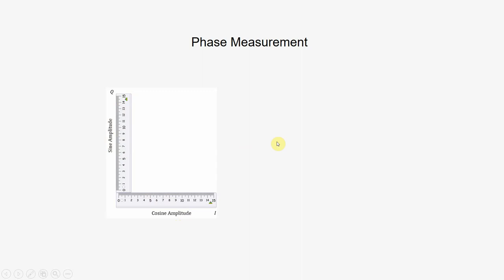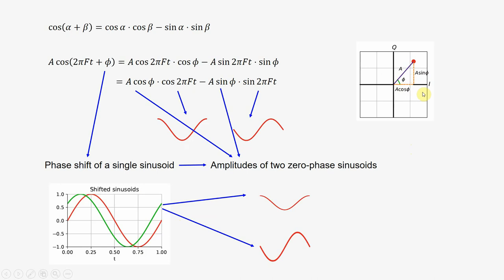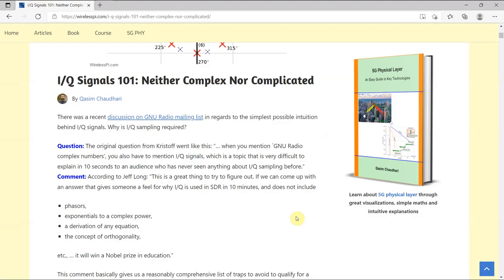From the signs of the amplitudes we can also find out which quadrant the phase was in. So this was a short summary of what IQ signals are about.